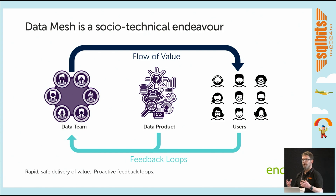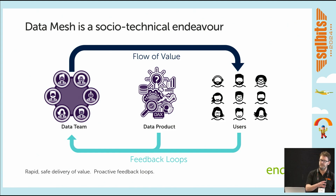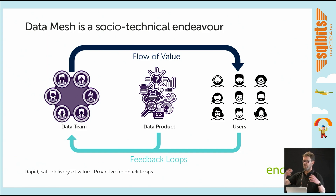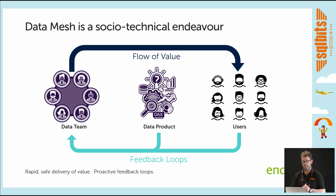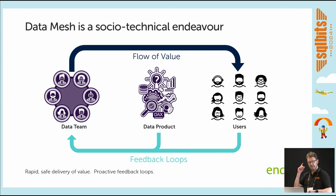There's a thing called Conway's Law that can often get in the way of the flow of value and feedback loops. If you've got a disjointed, disconnected organisational structure where the flow of value spans multiple teams working in a dysfunctional way, your ability to deliver value will be undermined. The focus is all about rapid and safe delivery of value, promoting feedback loops, listening to what those feedback loops are telling you, and being able to react. And this virtuous cycle continues.